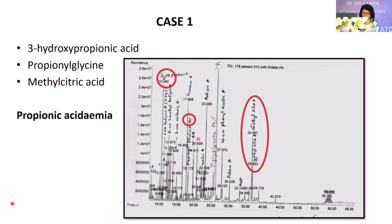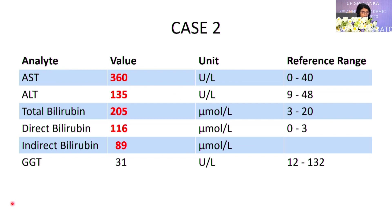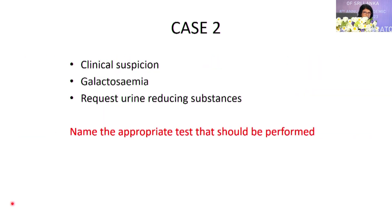The second case is also a neonate who presented with vomiting following meals. The clinician detected icterus and palpated the liver. Elevated transaminases and an obstructive pattern of jaundice were found. Considering this obstructive pattern with refusal of feeds and vomiting following meals, galactosemia was considered as a possibility. The clinician wanted us to check reducing substances in urine.